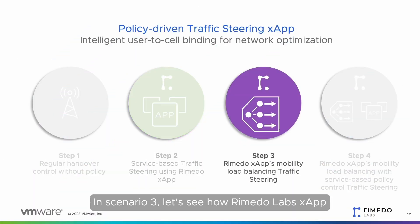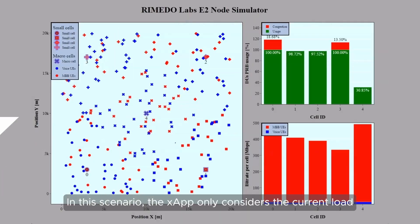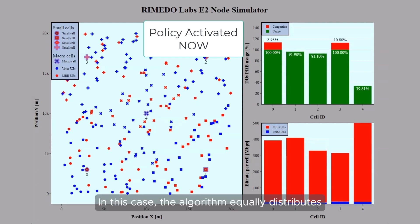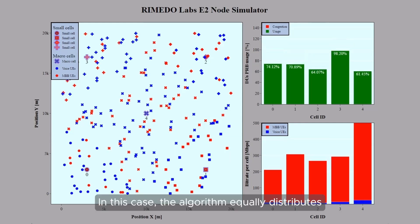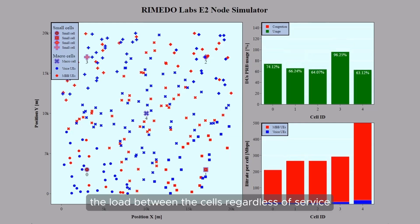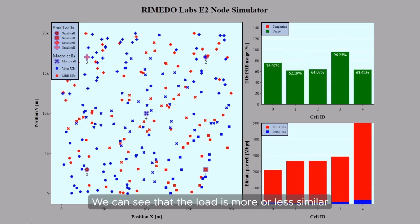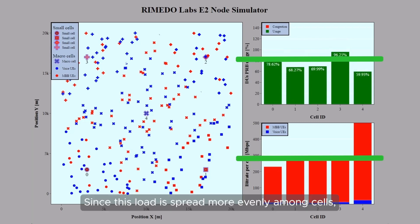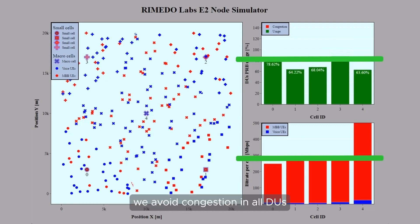In scenario three, let's see how Remedo Labs X-App applies mobility load balancing only to steer traffic. In this scenario, the X-App only considers the current load of each cell to decide the association of the UE to a cell. In this case, the algorithm equally distributes the load between the cells regardless of service. We can see that the load is more or less similar between all cells, and since this load is spread more evenly among cells, we avoid congestion in all DUs.